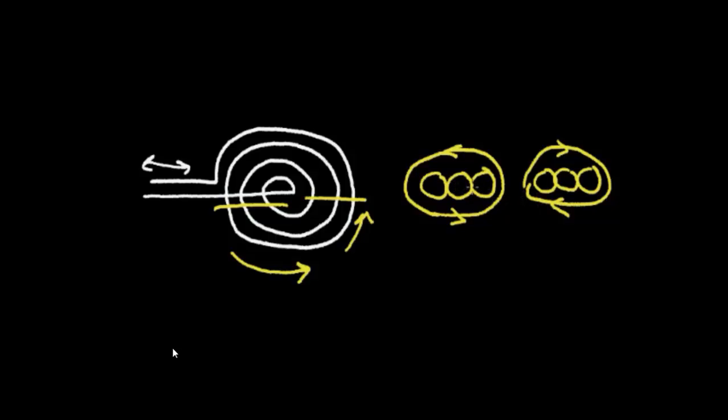So by changing the current rapidly back and forth, I can rapidly change this magnetic field back and forth. It will change directions.